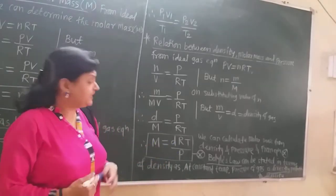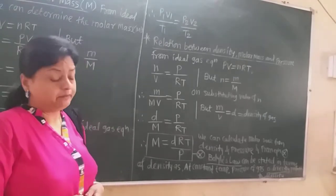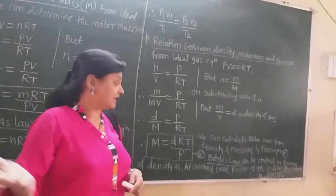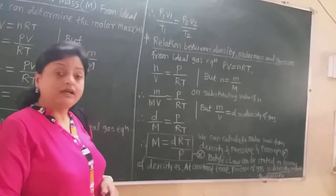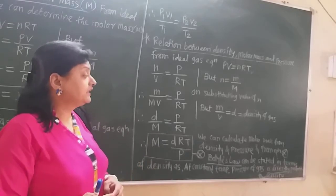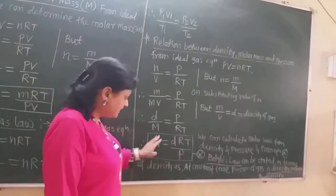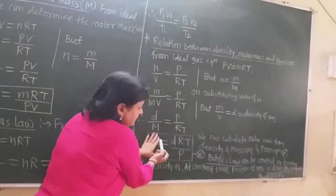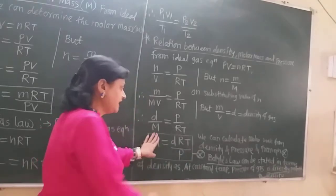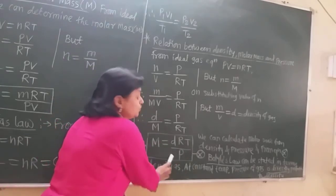From this equation, we can calculate molar mass from density and pressure. This equation also gives Boyle's law stated in a different way in terms of density: at constant temperature, the pressure of a given gas is directly proportional to its density, since temperature, gas constant, and molar mass are all constant.